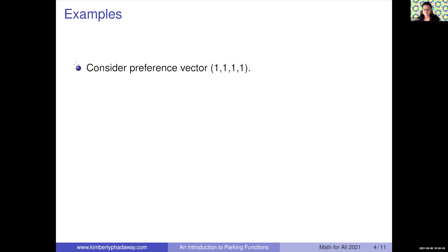Consider the preference vector (1, 1, 1, 1). The first car wants spot 1 and parks there. The second car wants spot 1, sees it filled, and parks in spot 2. The third car wants spot 1, sees spots 1 and 2 filled, and takes spot 3. The fourth car wants spot 1, sees spots 1, 2, and 3 filled, and parks in spot 4. Therefore, this is a parking function.